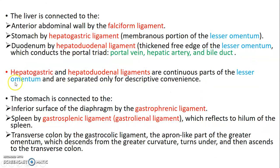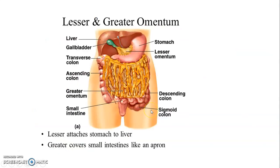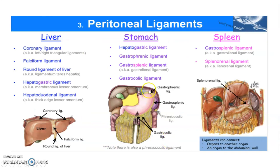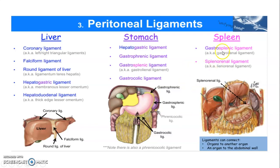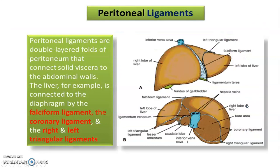The ligaments of the stomach include the gastrophrenic ligament connecting the stomach to the diaphragm, the gastrosplenic ligament connecting the stomach to the spleen, and the gastrocolic ligament connecting the stomach to the transverse colon. The spleen has two peritoneal ligaments: the gastrosplenic and the splenorenal ligament — from the spleen to the kidney — which is also called the lienorenal ligament.